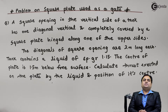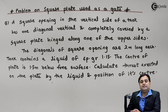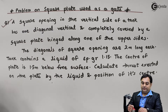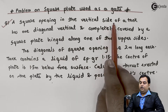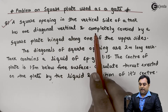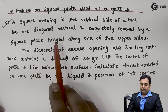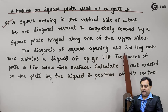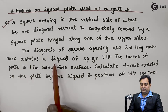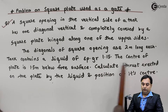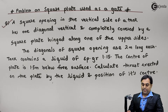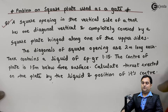Hello friends, in this video we will see a problem in which a square plate is used as a gate for a tank. I'll mark this question and read what is given: a square opening in the vertical side of a tank has one diagonal vertical and completely covered by a square plate, hinged along one of the upper sides. Let us get started with the given data.